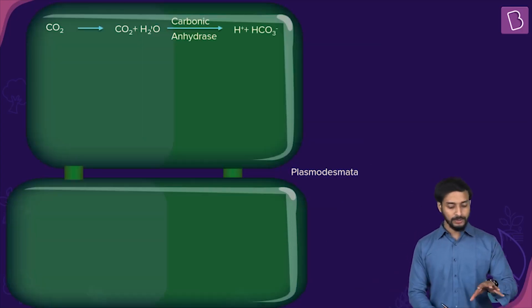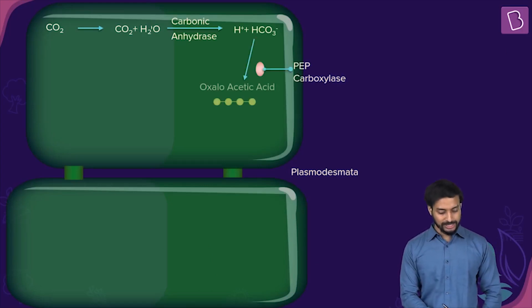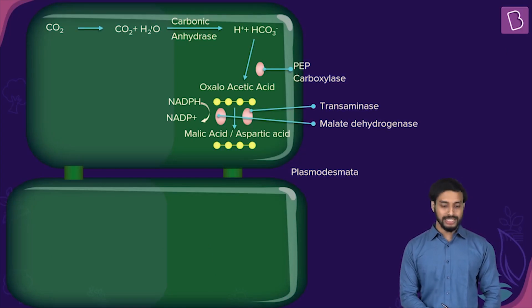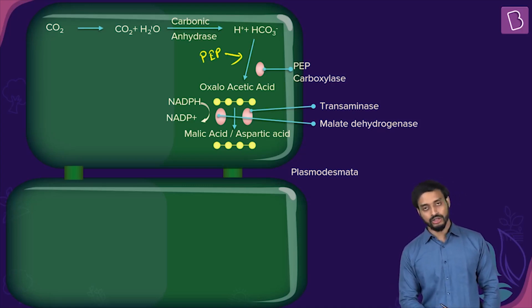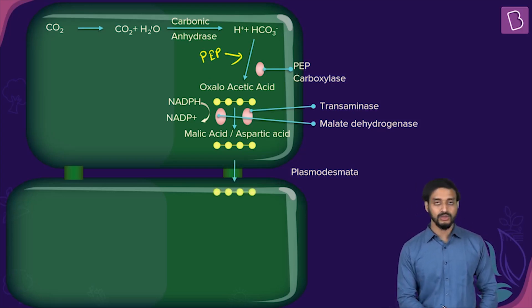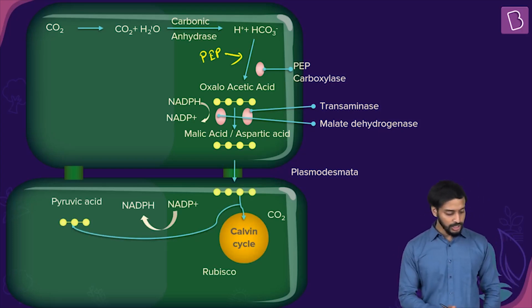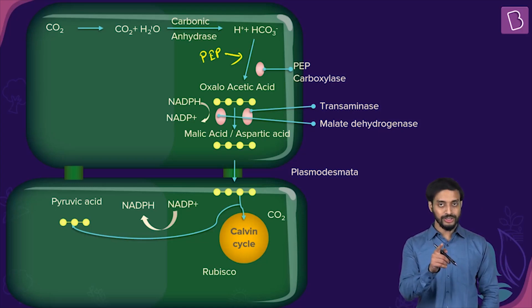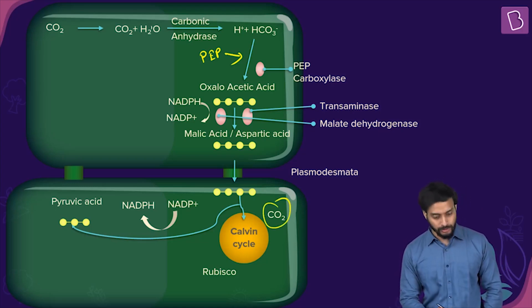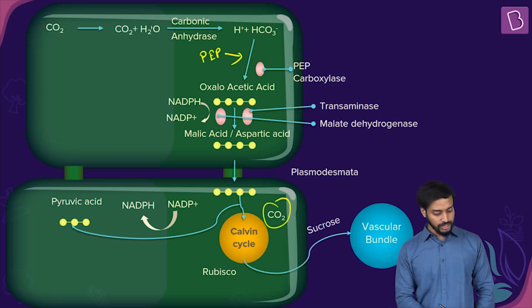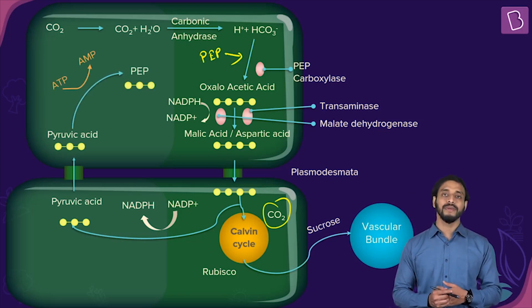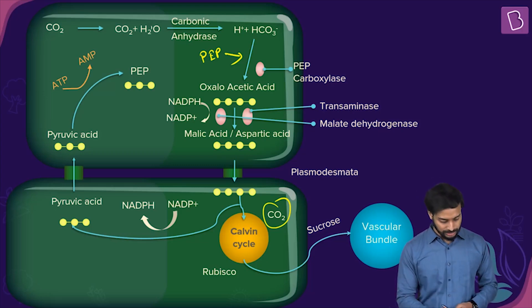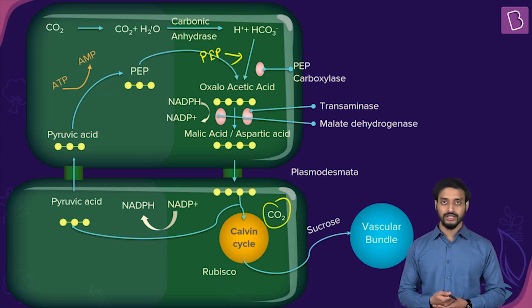To recap the full cycle: in the mesophyll cells, carbonic anhydrase produces HCO₃⁻, which combines with PEP via PEP carboxylase to form oxaloacetic acid. OAA is converted to malic acid or aspartic acid, then transported through plasmodesmata to the bundle sheath cells. Carbon dioxide is released there and fixed via the Calvin cycle by RuBisCO. Pyruvic acid is then transported back to the mesophyll cells and regenerated into PEP, completing the cycle.